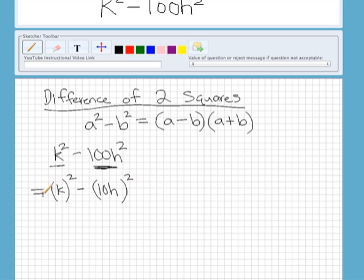So to factor that further, we look at our formula here. We take k as kind of like our a value and then 10h, I'll write it below here, a, and this is like our b in this formula here.